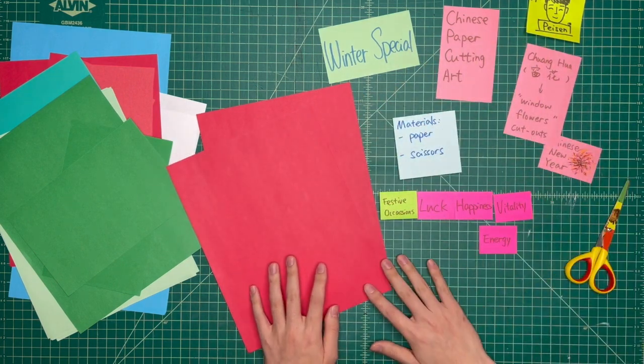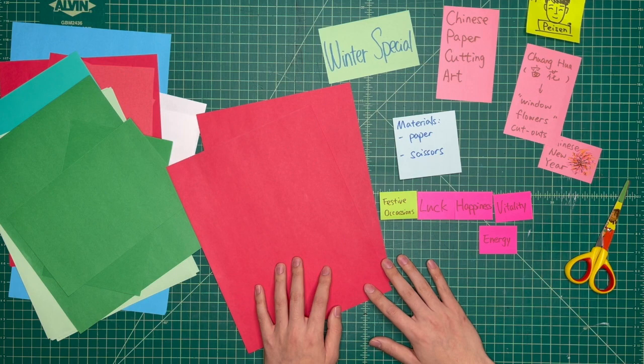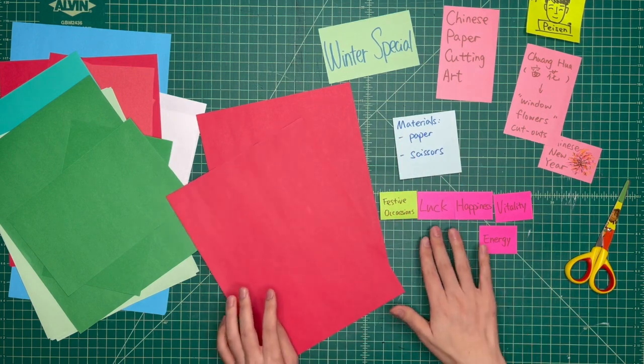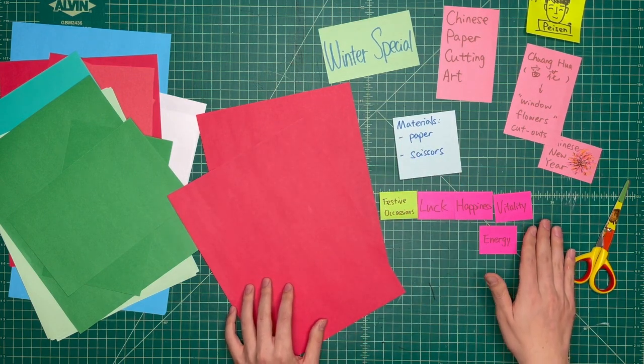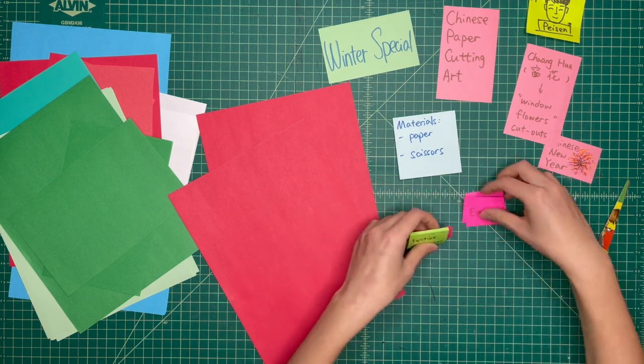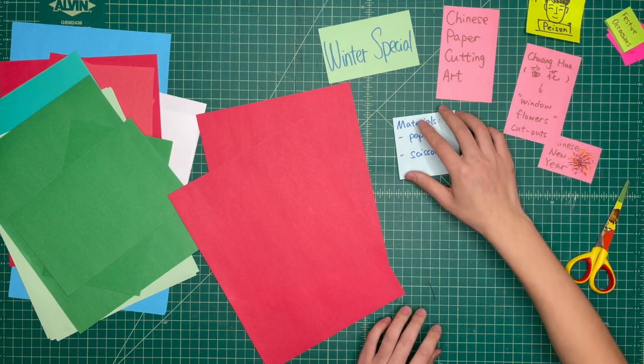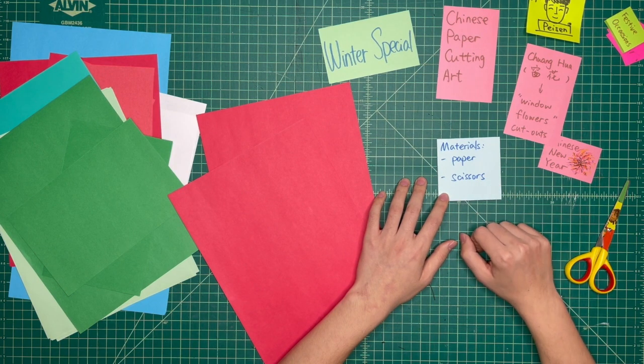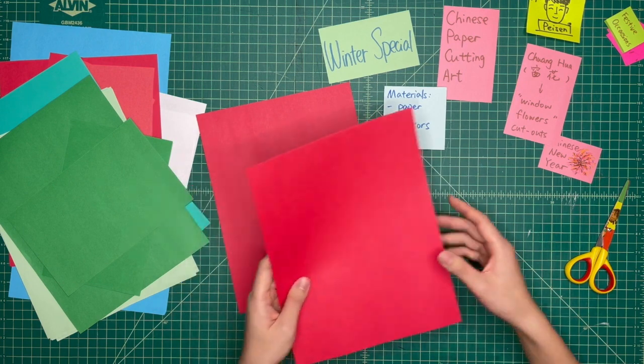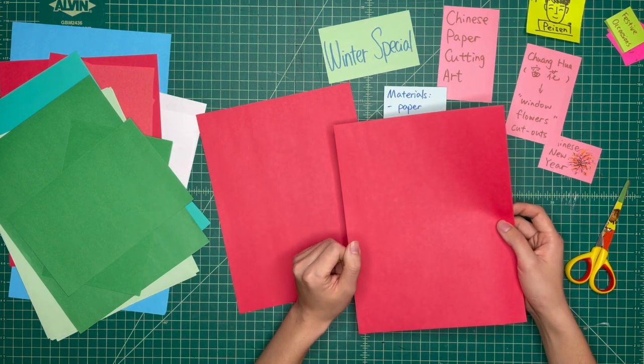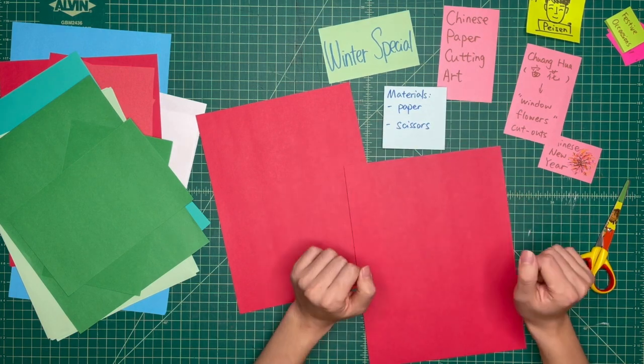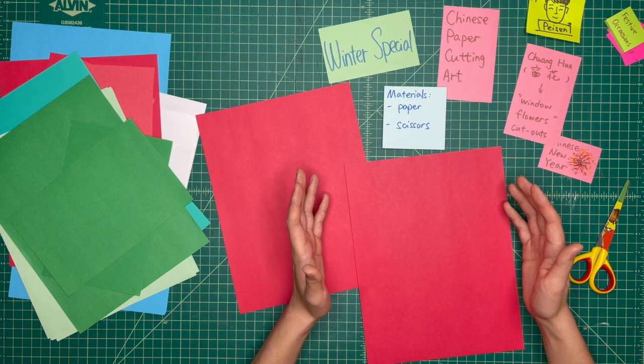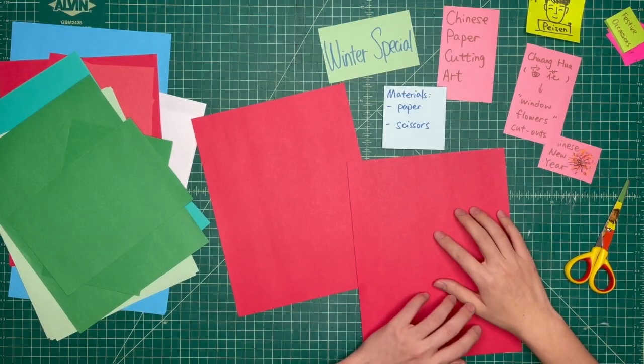When we're making the window flowers using red paper, we just want to symbolize these good things like happiness and vitality. Let's get into it. Let's get started. So today, the materials we need are very simple. We only need paper and scissors. If you don't have red paper, it's okay. Just be patient and have a look of my demo first. And then you can decide what kind of paper you want to use or what kind of color you want to use.